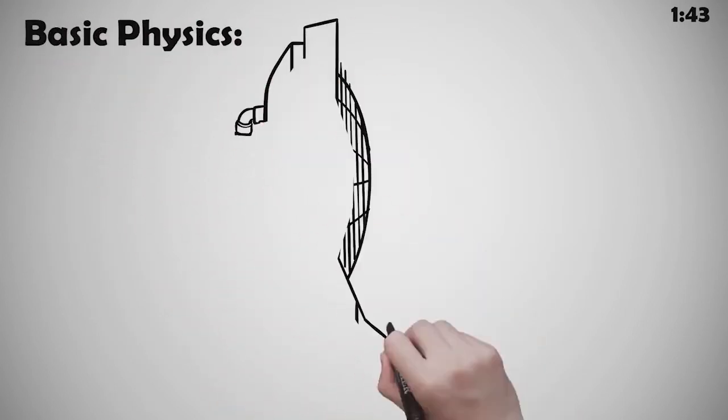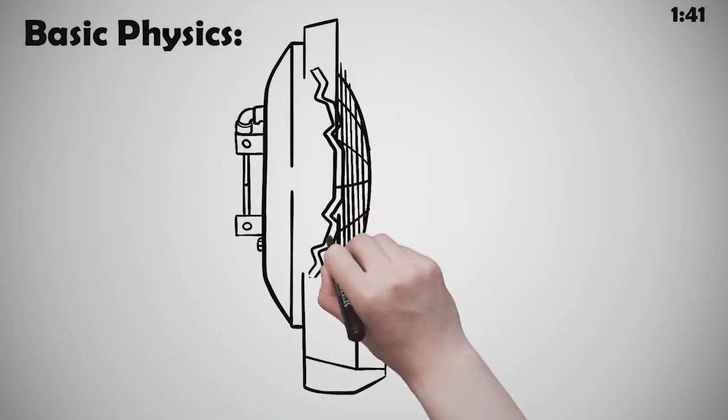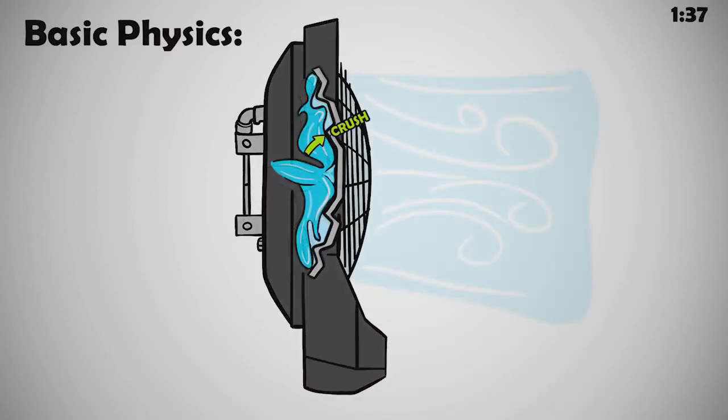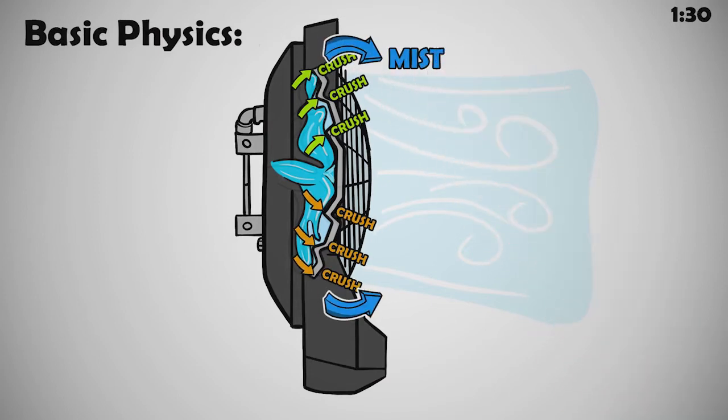The basic physics is water is sprayed on the back of the plate. Rotation speed and the plate wave-like contours determine the break-up of the water into finer and finer ligaments that end up crushing on the edge of the plate and turning into mist.